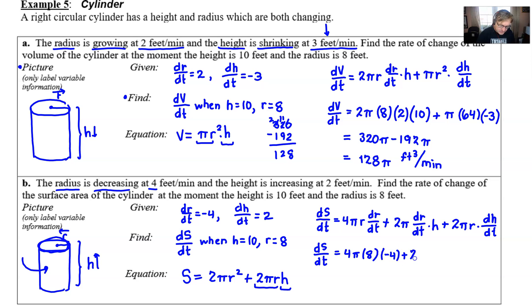And then we'll add 2π times dr/dt again, which is -4, multiplied by our h, which is 10. And then finishing up, we have 2π. Let's see if I can squeeze this in. r is 8, and the dh/dt is positive 2. So now it's just a matter of getting this all cleaned up.